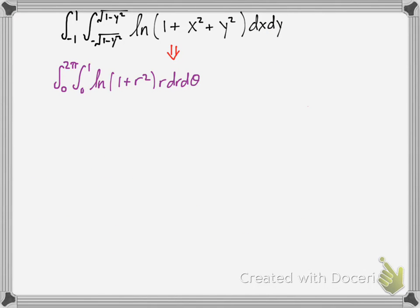Now let's see if we can solve it. We're going to have to do some u substitution. u is going to be r squared plus 1, and du is going to be 2r dr, but we'll make that into 1 half du equals r dr.